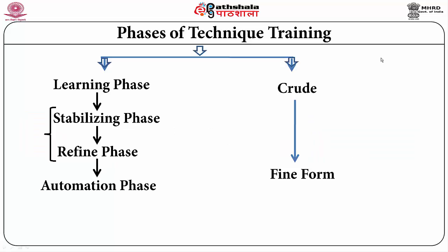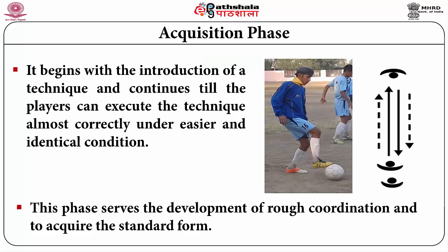First we go for the learning phase, then the stabilization or refining phase, next is the optimization phase — moving from crude to fine form. In the acquisition phase, that is the introduction of a new technique, it begins with the introduction and continues till a player is acquiring a rough form.